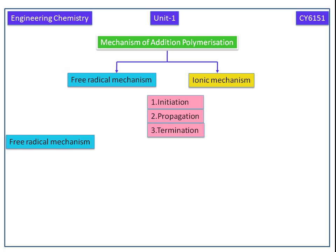In this video, we are going to discuss the free radical mechanism. Here the first step is initiation. It involves two steps. One is formation of free radicals. Second one is addition of free radicals to first monomer.